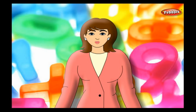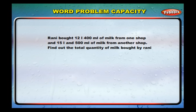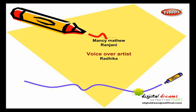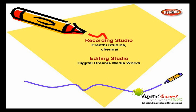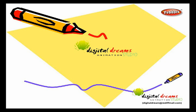Let us now do a word problem on capacity. Rani bought 12 liters 400 milliliters of milk from one shop and 15 liters 500 milliliters of milk from another shop. Find the total quantity of milk bought by Rani. 12 L 400 mL + 15 L 500 mL = 27 liters and 900 milliliters. Thank you.